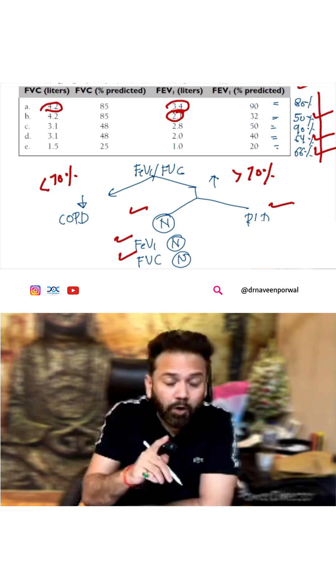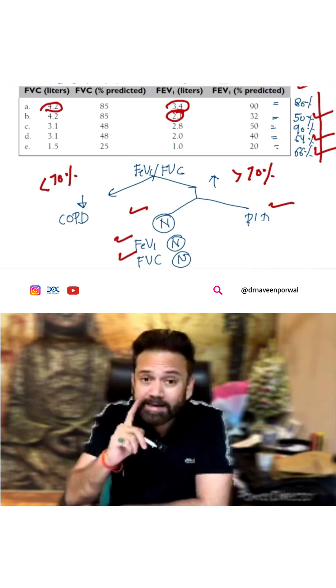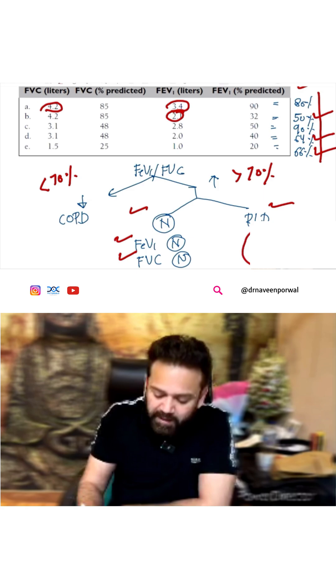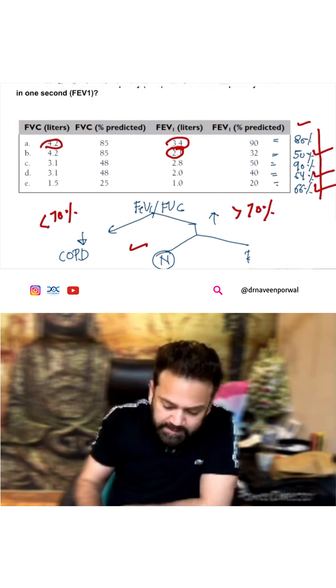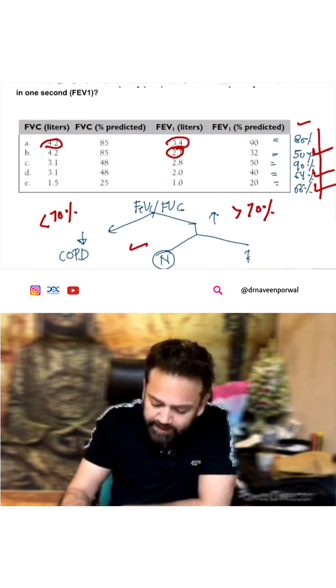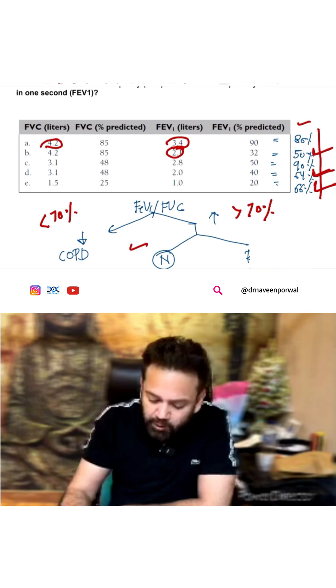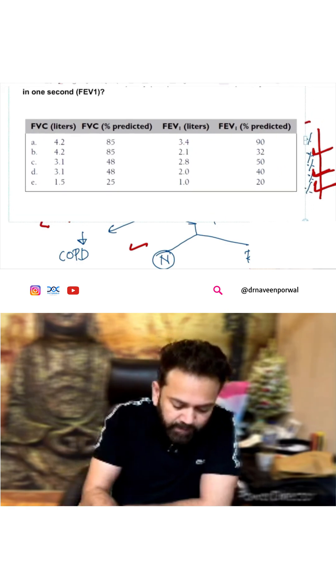In RLD, although ratio will be more, but individually both will be very decreased. So you can see here, these are less than 70 percent - COPD. Now, A and C can be RLD as well as can be normal.